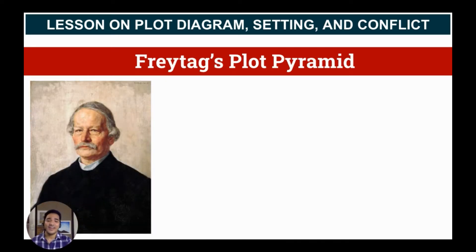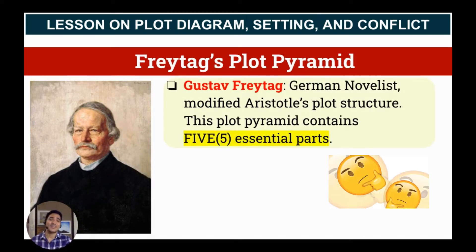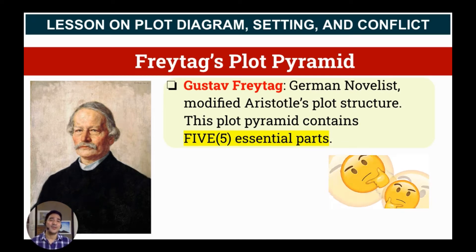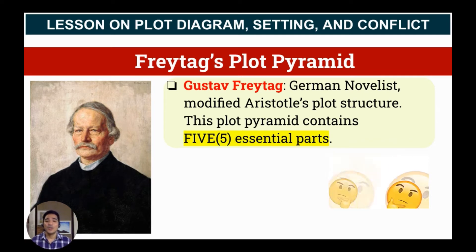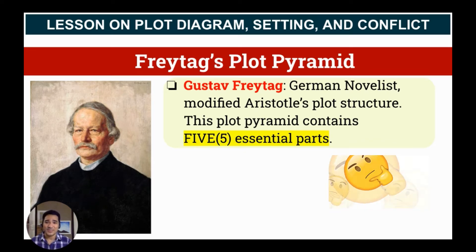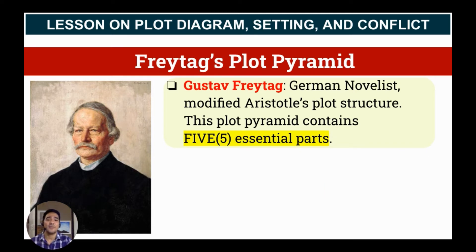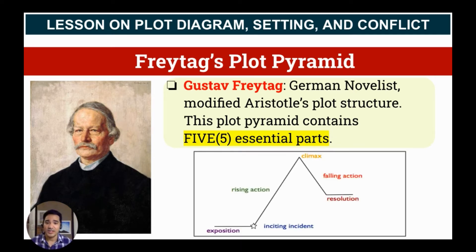Someone modified Aristotle's plot structure. His name was Gustav Freytag, a German novelist. He added two more essential parts, and he named it after himself — Freytag's plot pyramid. The essential parts are: exposition, rising action, climax, falling action, and resolution.